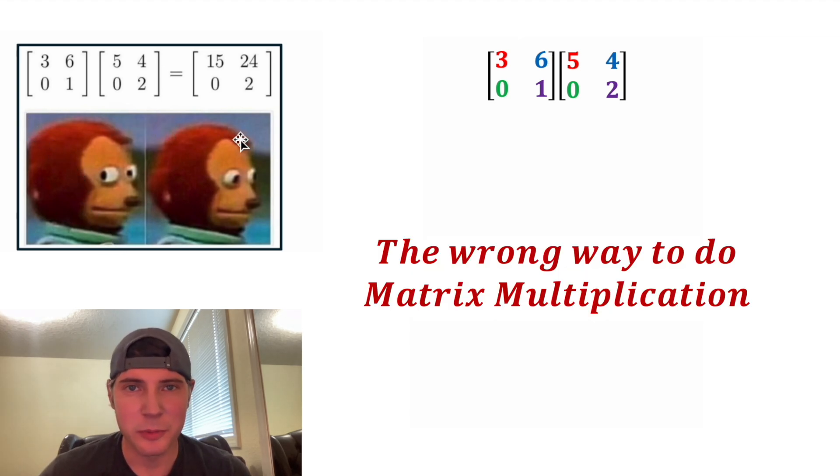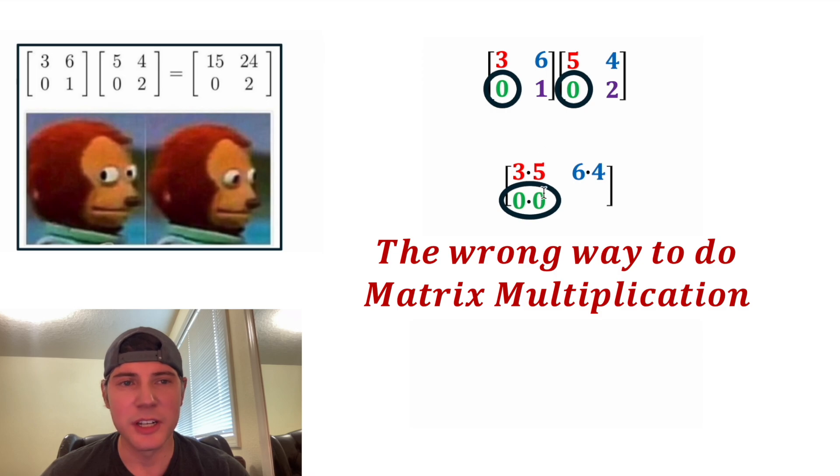The wrong way to do matrix multiplication: 3 times 5 and put that here, 6 times 4 and put that there, 0 times 0 and put it here, and 1 times 2 and put it here.